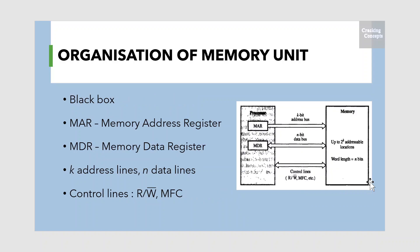Now let us look into the organization of a memory unit. Modern implementations of computer memory are rather complex and difficult to understand on first encounter. To simplify the introduction to memory structures, we present a traditional architecture here. From the system point of view, we can view the memory unit as a black box. Data transfer between the memory and the processor takes place through the use of two processor registers, usually called MAR or memory address register and MDR or memory data register.